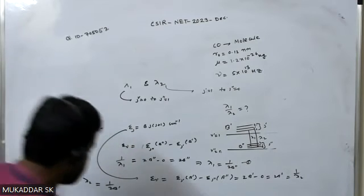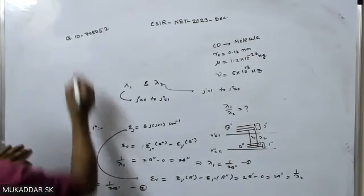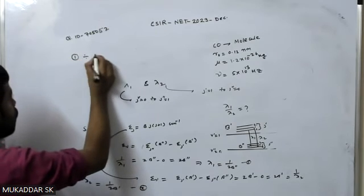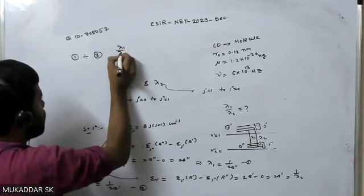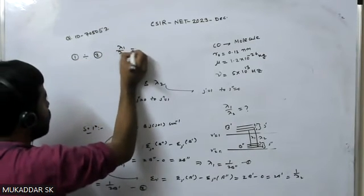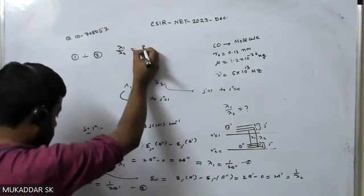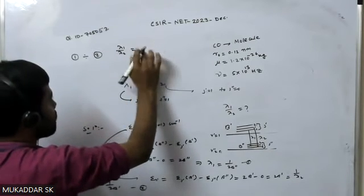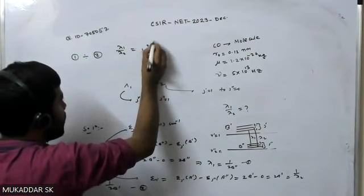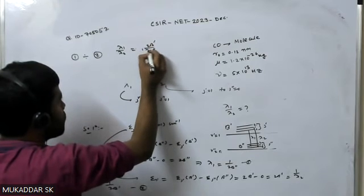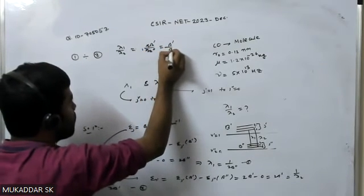Now if we divide equation 1 by equation 2, on the left-hand side we have (1/λ1)/(1/λ2) = λ2/λ1, and on the right-hand side that will be 2B' divided by 2B''. Canceling the 2s, we get λ2/λ1 = B'/B'', or equivalently λ1/λ2 = B''/B'.